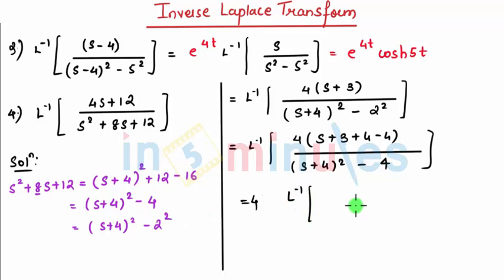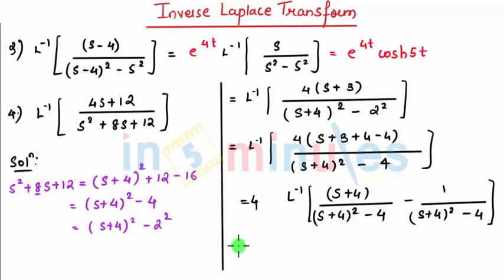I can write L inverse of (s+4) divided by (s+4)² - 4 and the rest term is minus 4. So, 3 minus 4 that comes minus 1 divided by (s+4)² - 4, which is nothing but final answer. This is equal to 4 e^(-4t) [cosh(2t) - (1/2)sinh(2t)].